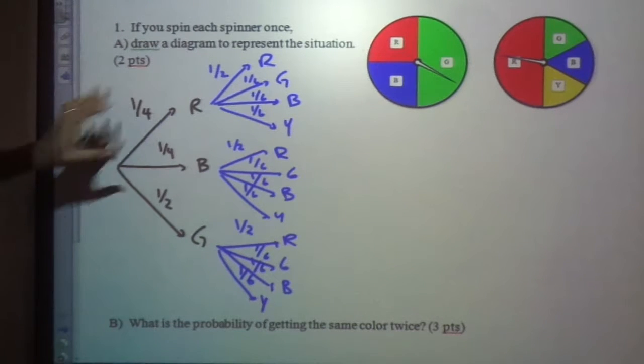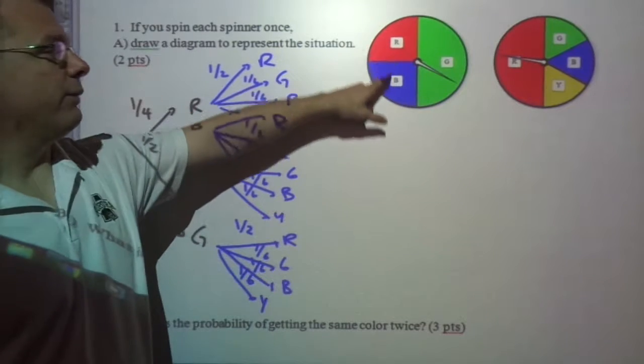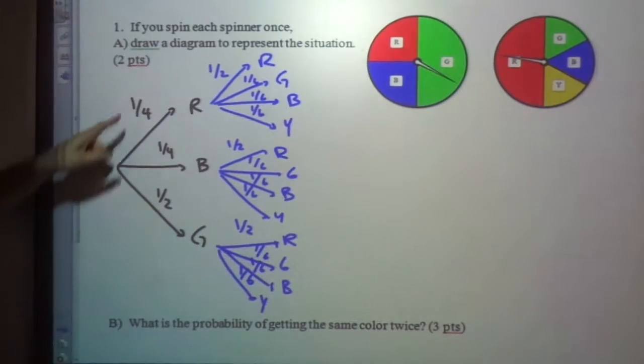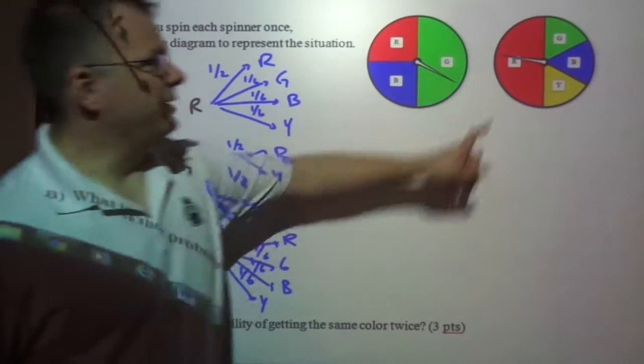So our first spinner is this one, and that could be one-fourth for these, or one-half for this. So I've got one-fourth, one-fourth, and one-half. This is one-half.